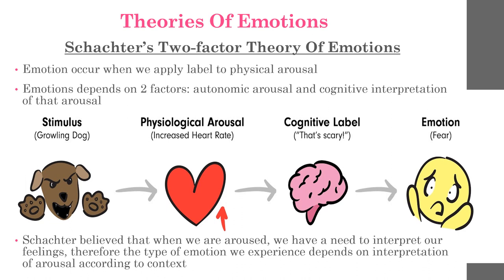According to Schachter, emotion occurs when we apply a particular label to a general physical arousal. The experience of emotion therefore depends on two factors: autonomic arousal and cognitive interpretation of that arousal. The following is an example of the application of the two-factor theory.